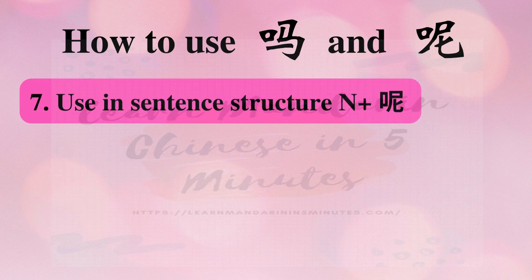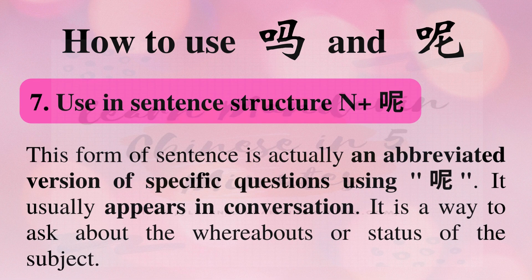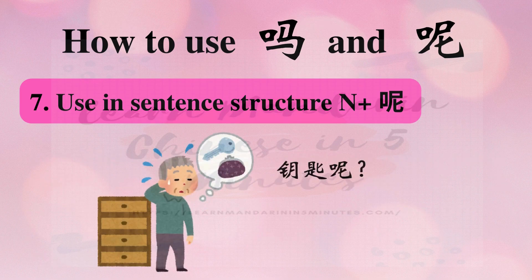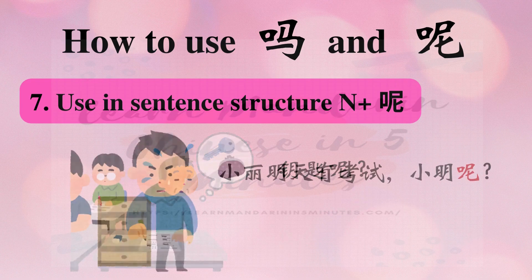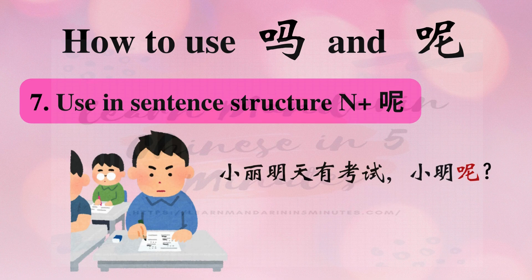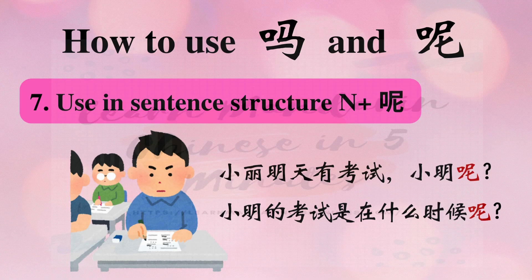Number seven: 呢 is used in the sentence structure N + 呢, where N is a noun. This form is actually an abbreviated version of specific questions using 呢. It usually appears in conversation as a way to ask about the whereabouts or status of the subject. For example, 钥匙呢? is an abbreviated version of 钥匙在哪里呢? or 钥匙在什么地方呢? — meaning 'Where are the keys?' Another example: 小力明天有考试，小明呢? asks when 小明 will have his exam. The longer version is 小明的考试是在什么时候呢?